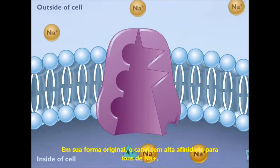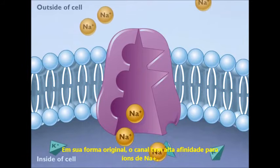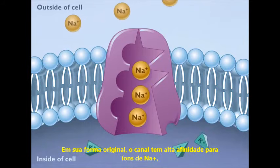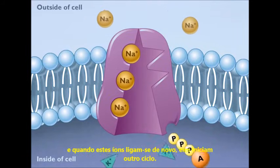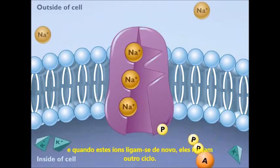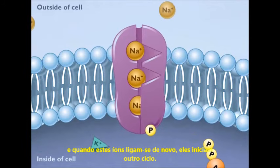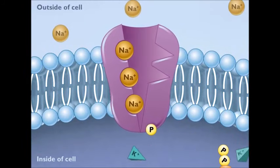In its original shape, the channel has a high affinity for sodium ions, and when these ions bind again, they initiate another cycle.